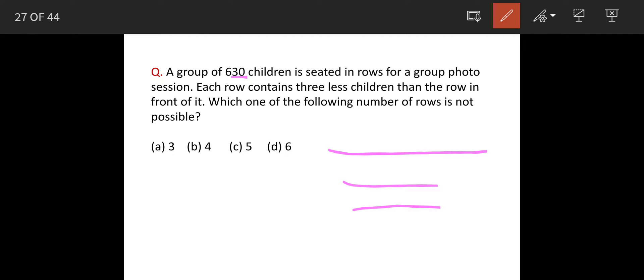The question says that each row contains 3 less children than the row in front of it. So that means, if this is having x, then this row will have x minus 3 and next row will have x minus 6. So in this manner, which of the following rows is not possible. These are the number of rows given, possible rows given, and which one is not possible, this we have to find out.